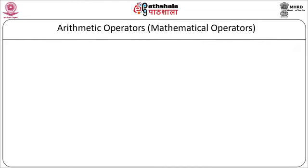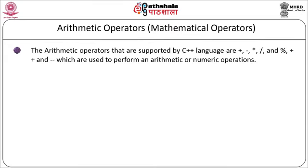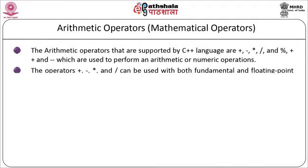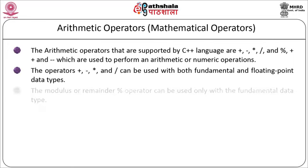Arithmetic operators are mathematical operators. Those supported by C++ include: plus, minus, star (*), slash (/), and mod (%). Also, plus-plus (++) and minus-minus (--) for increment and decrement. The operators +, -, *, and / can be used with both fundamental and floating point data types. The modulus or remainder operator (%) is used only with fundamental data types.